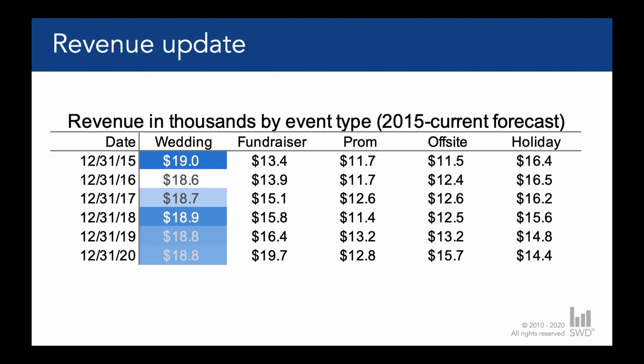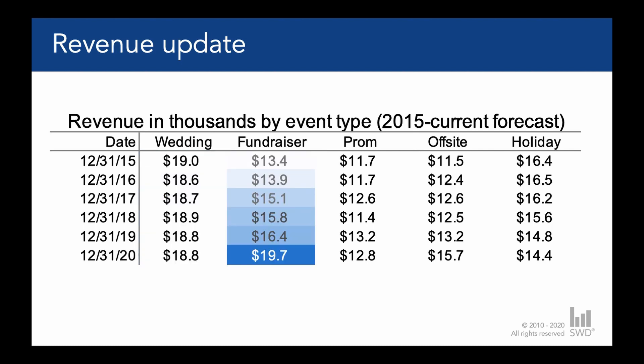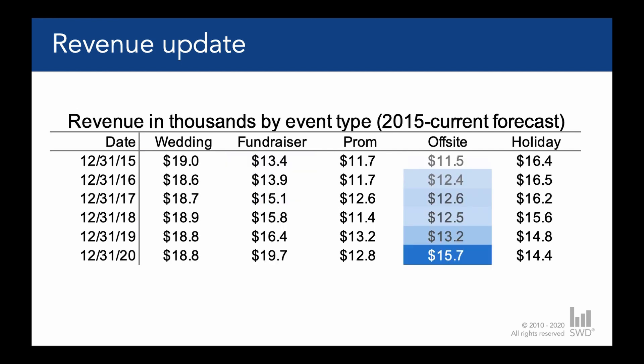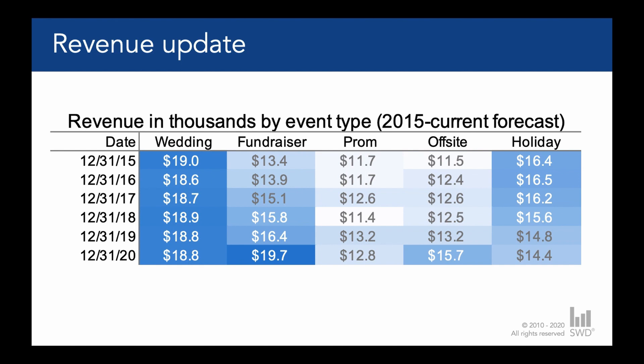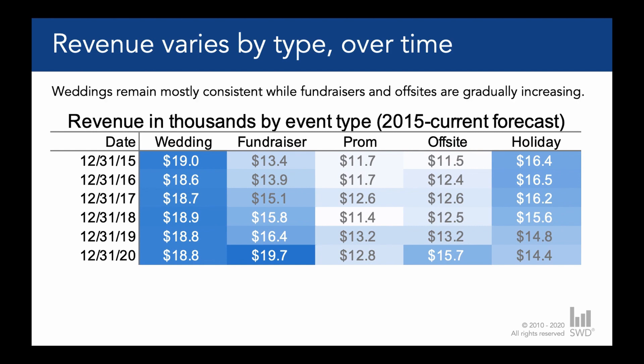We can see that revenue for weddings was highest in 2015 and has declined over time, or that fundraiser revenue is gradually increasing, and we see the same trend in off-site. Broadly speaking, across all five different event types, revenue varies both by type and over time. We could take the opportunity to stake that takeaway in words in a very prominent place — the title bar. And on the topic of words, we can use annotations to be more specific about our main headline. Adding the words 'weddings remain mostly consistent while fundraisers and off-sites are gradually increasing' tells you what to look for when you get to the data in the table.